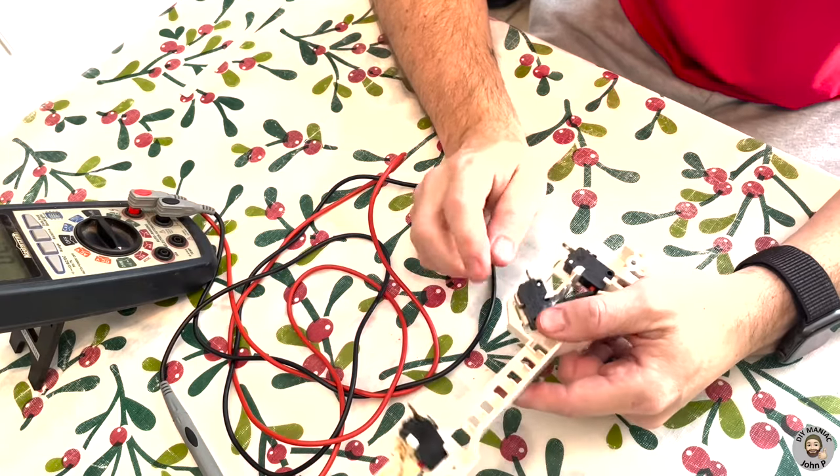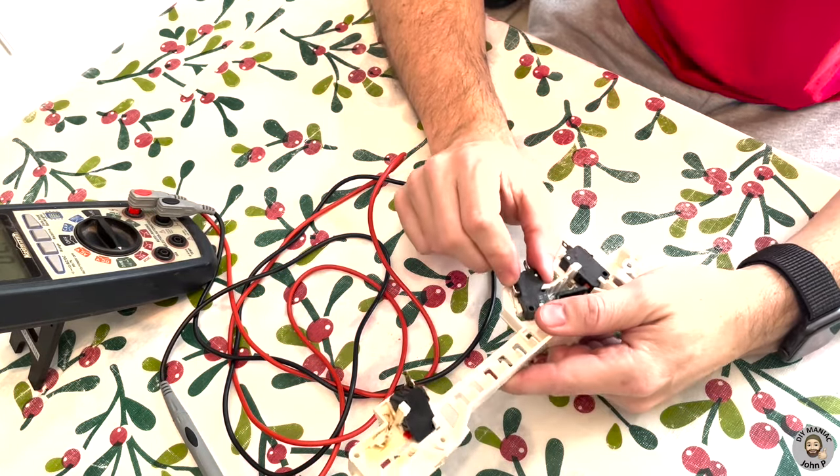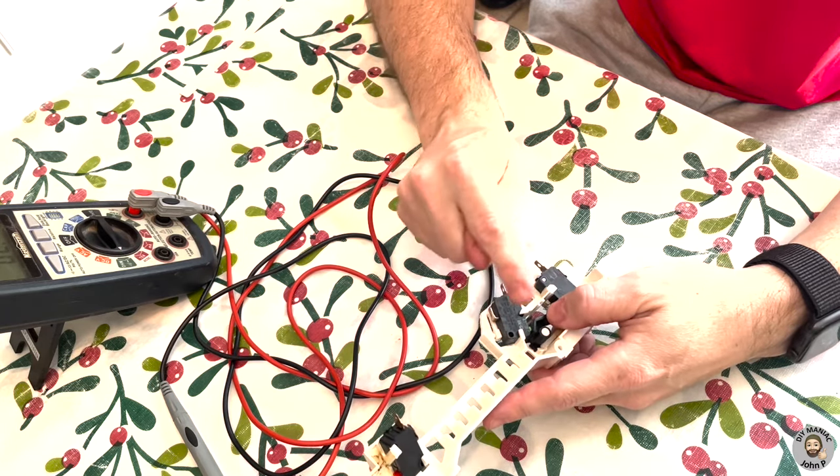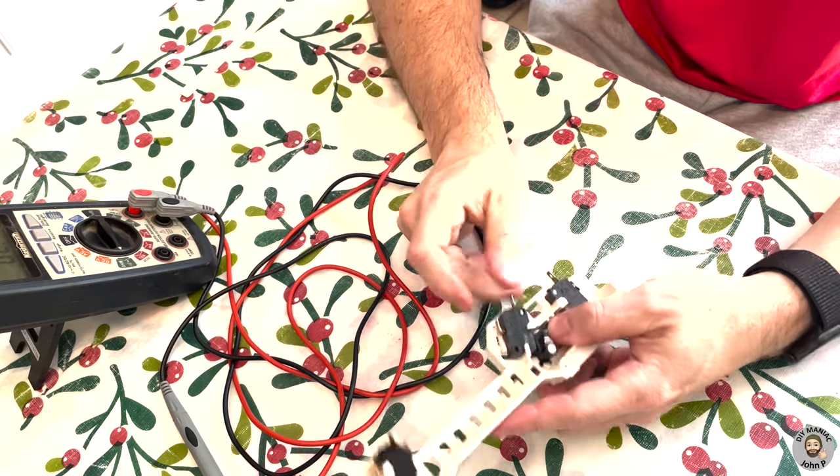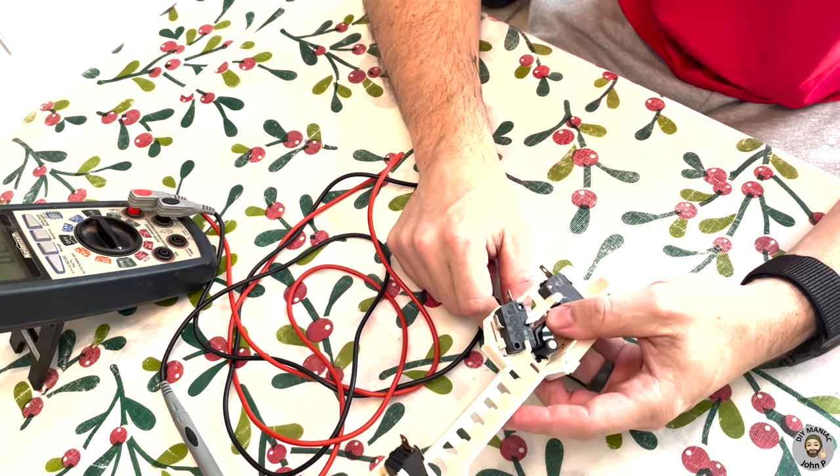In my particular case, I was able to isolate this switch as being the faulty one. This one is an always closed switch. So without the button depressed, it's always allowing electricity to flow. Until depressed, it opens the circuit and stops and breaks the electricity flow.